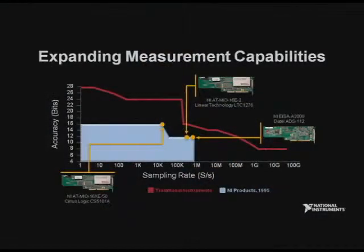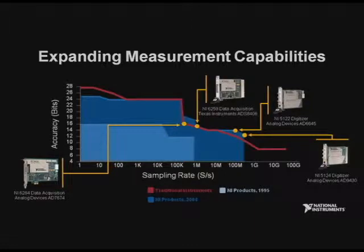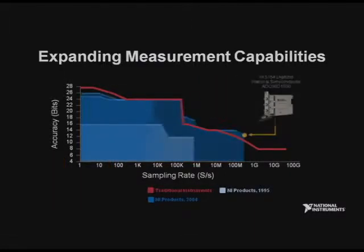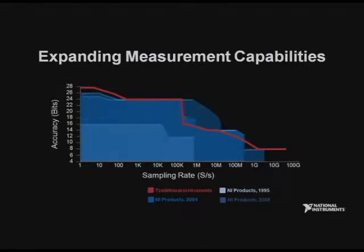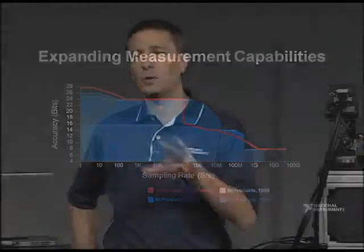We've measured our progress over the years in our digitizing capability with a chart of accuracy versus sampling rate. The idea behind virtual instrumentation is that if you can digitize the signal, you can use software to make any type of measurement. One of our core strategies has been to use commercial converter technology from companies like Analog Devices and Texas Instruments — parts intended for applications like cellular base stations and high-definition televisions — and they've followed a Moore's Law progression over the years. Over the last 10 years, we have dramatically increased our capability in terms of the signals that we can digitize.